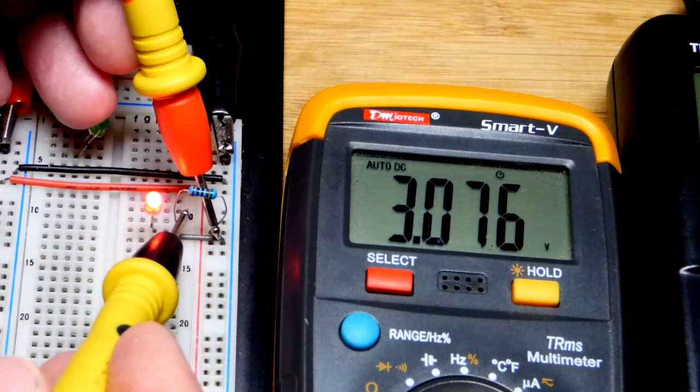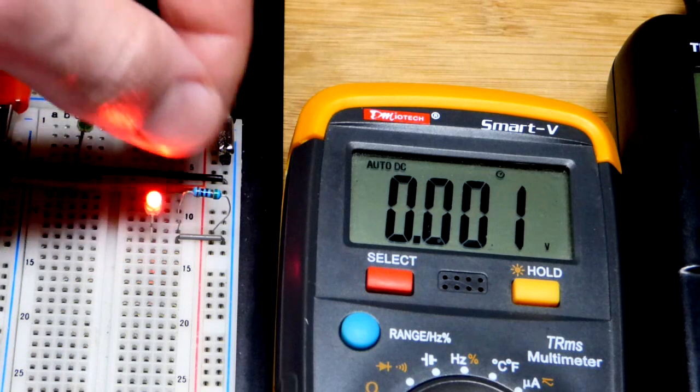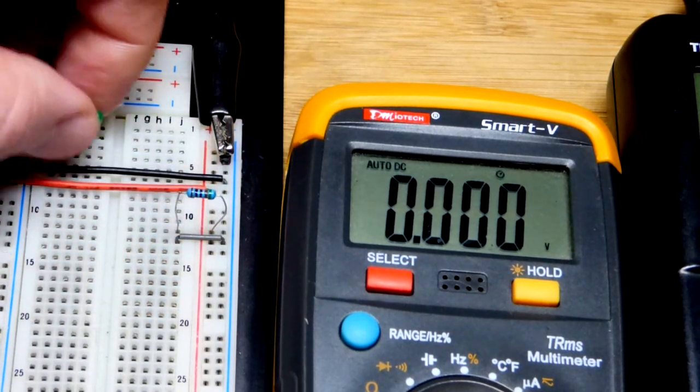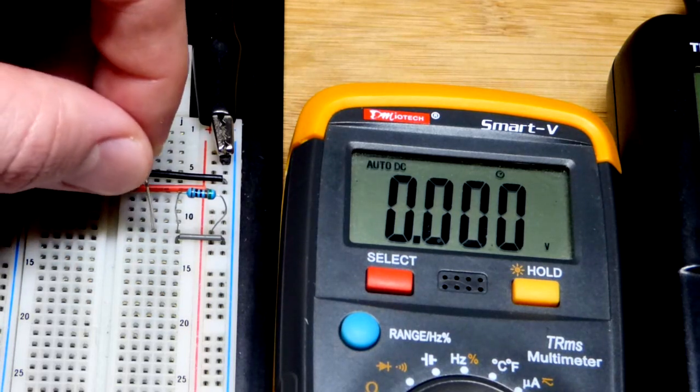And so there we got the resistor, and about the same voltage across it, but since it's half the resistance of a 1 kilo ohm, you'll get about twice the current.